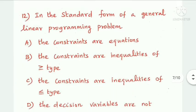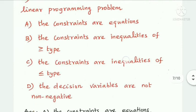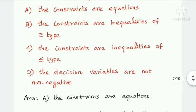Next question: in the standard form of a general linear programming problem — all constraints are equations, the constraints are inequalities of greater-than-or-equal-to type, the constraints are inequalities of less-than-or-equal-to type, or the decision variables are not non-negative. Option A is the answer: all constraints are equations.